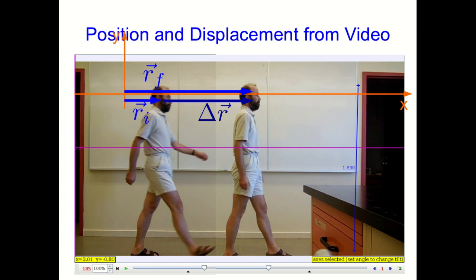And notice, as we expect, if I redefine where the axes are, the position vectors have changed but the displacement vector hasn't. And the other thing to notice is that if I copy those vectors down below and flip the ri around, you can see that rf plus negative ri gives delta r.